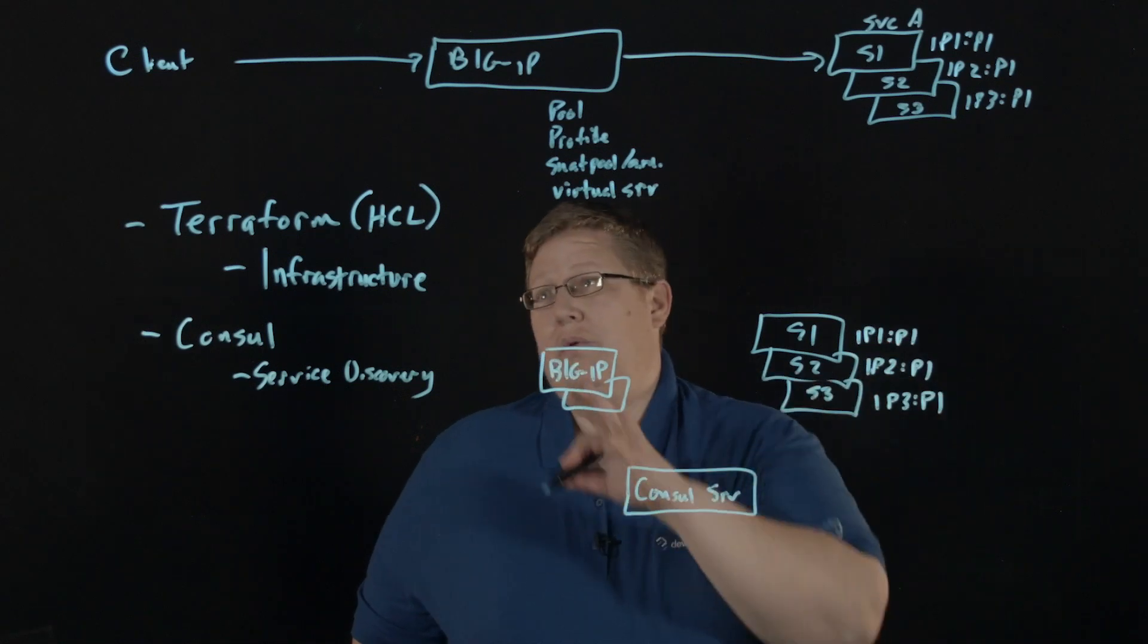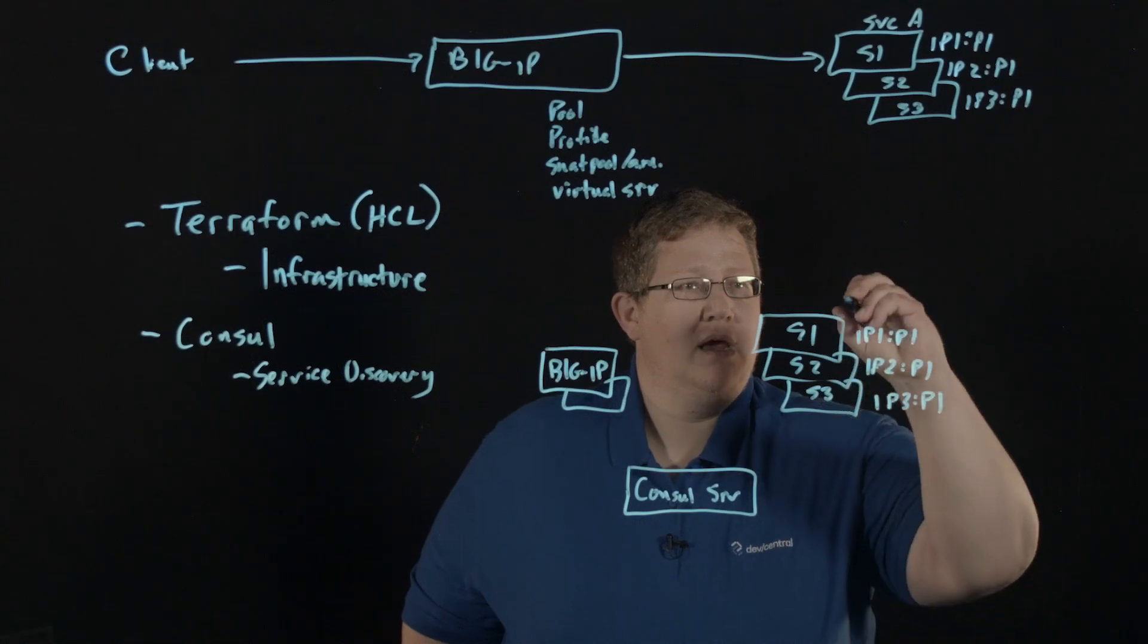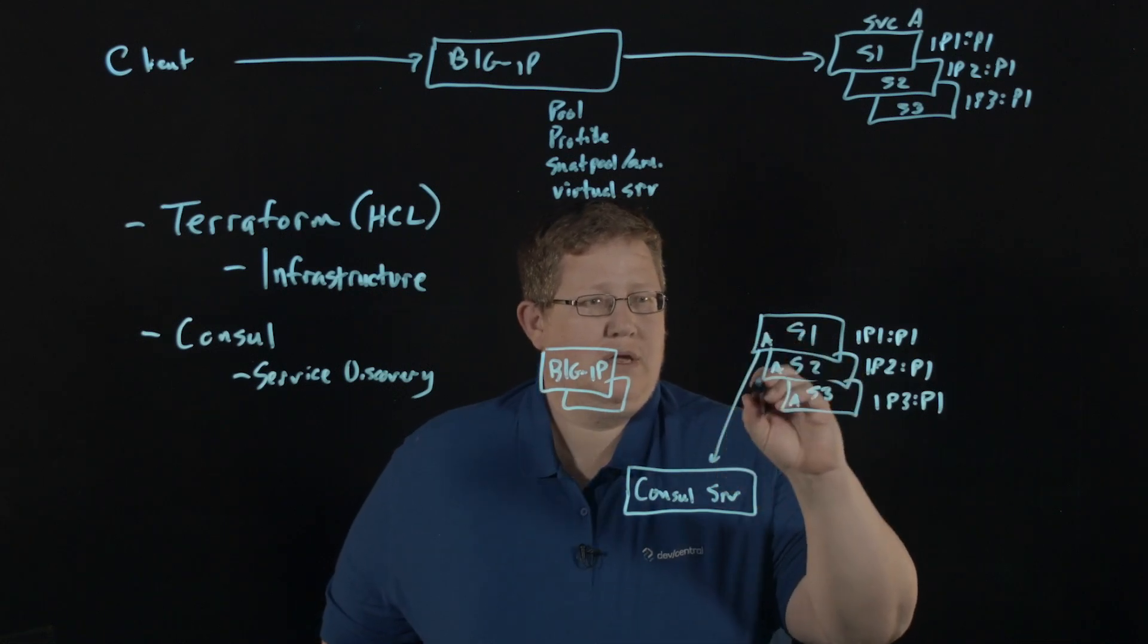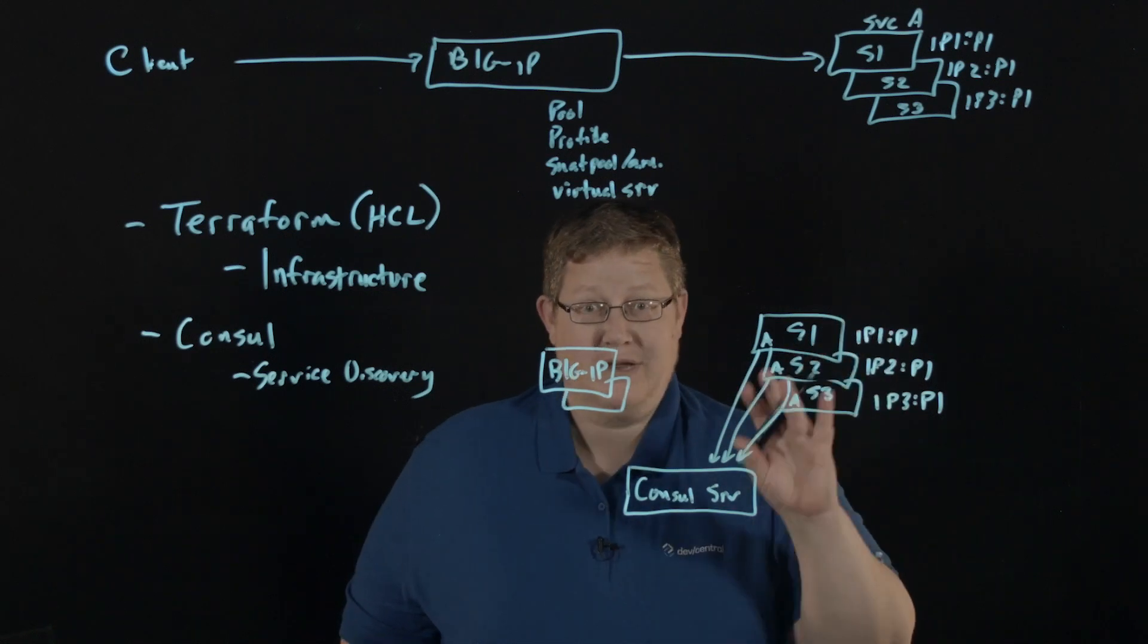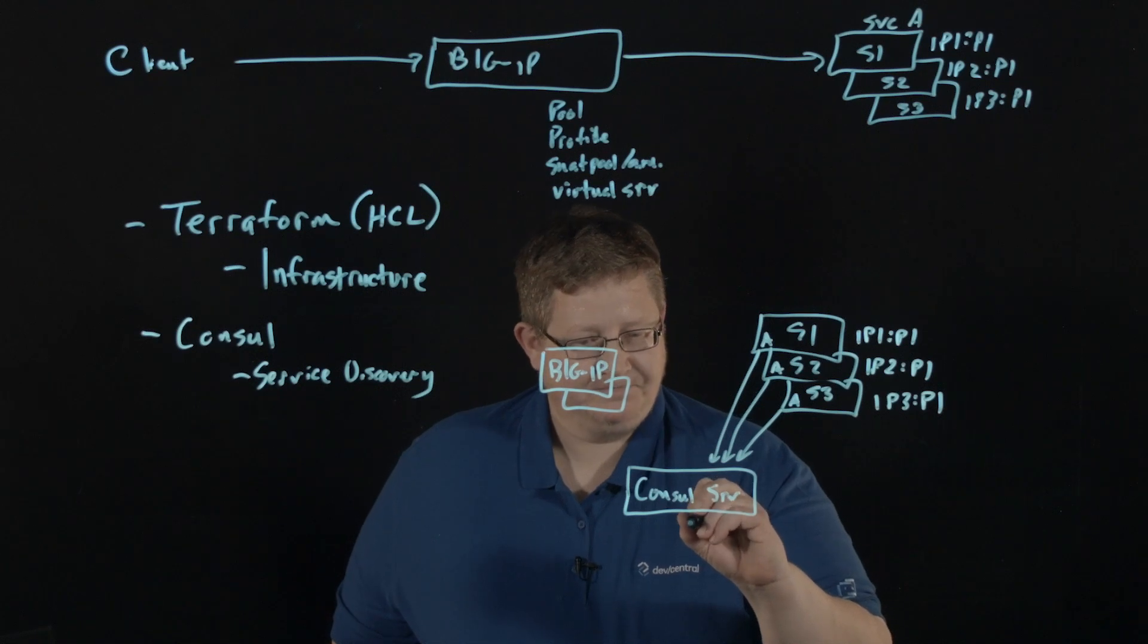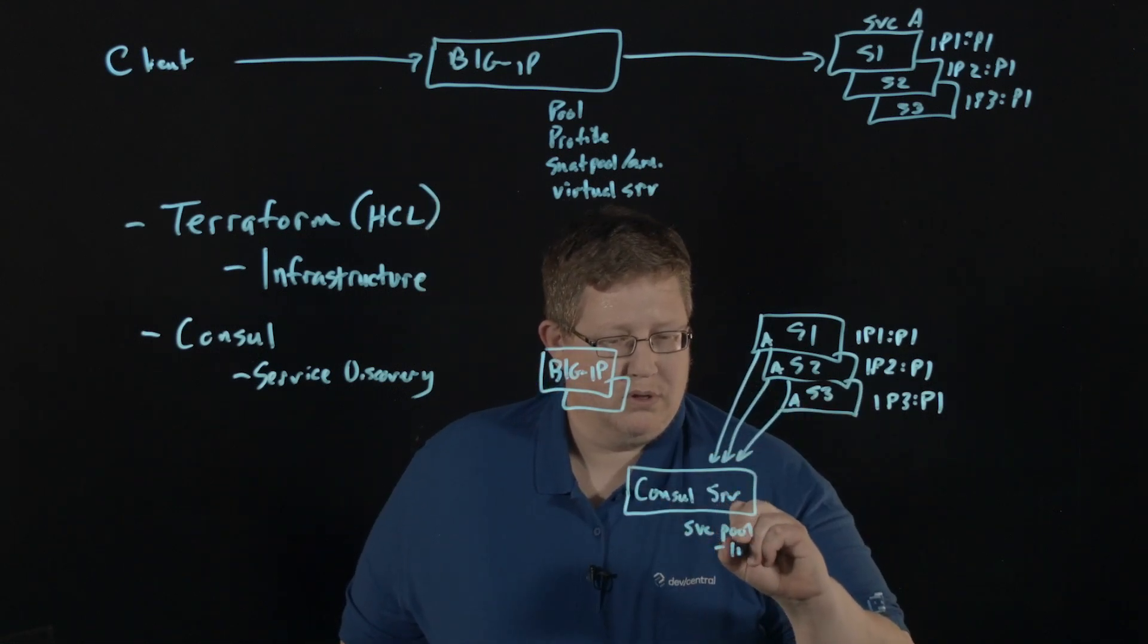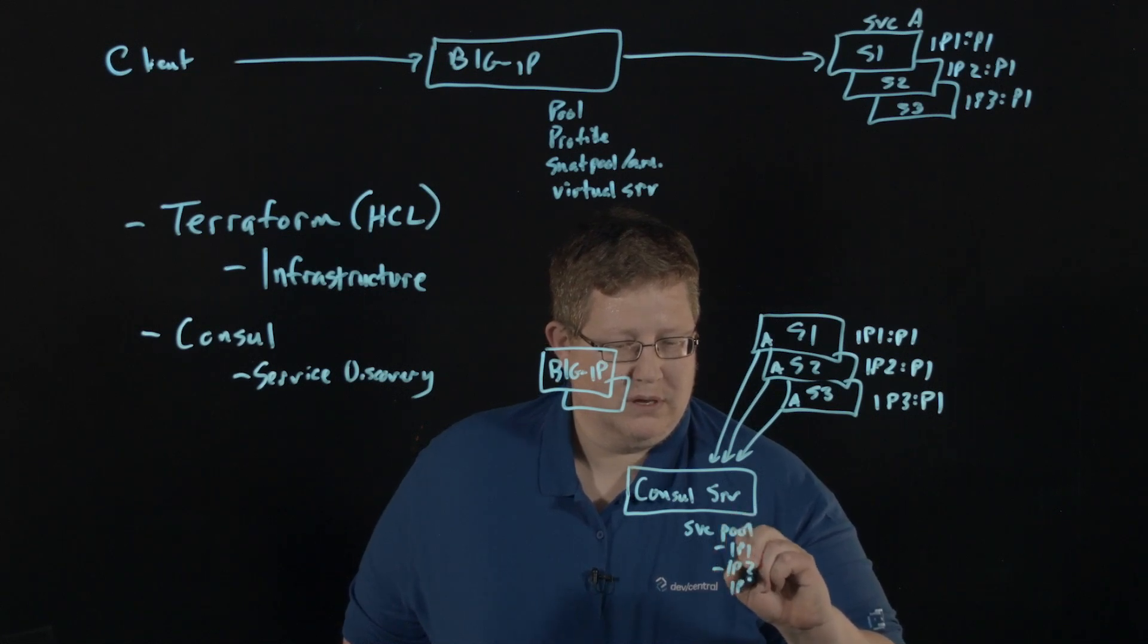And so agents, when we deployed our infrastructure declaration, then there's an agent running on these. And so when these get spun up, it notifies the Consul server that it exists. So it registers here. And so now I have a little service pool specific to whatever I deployed. And I have in that pool, IP1, IP2, and IP3.